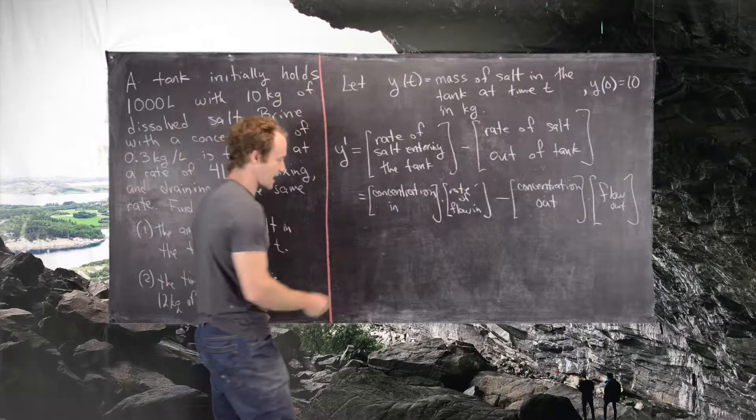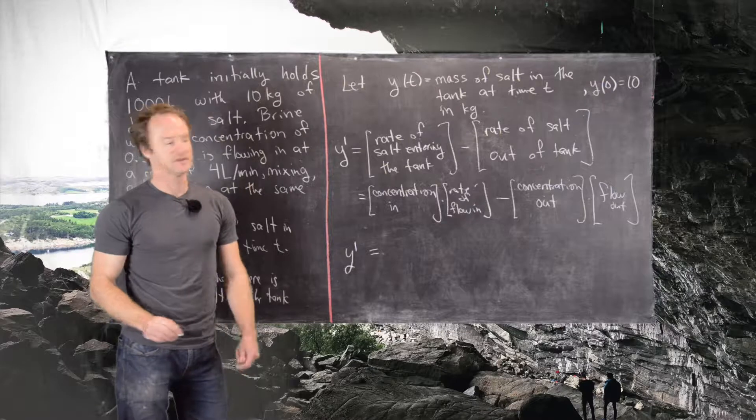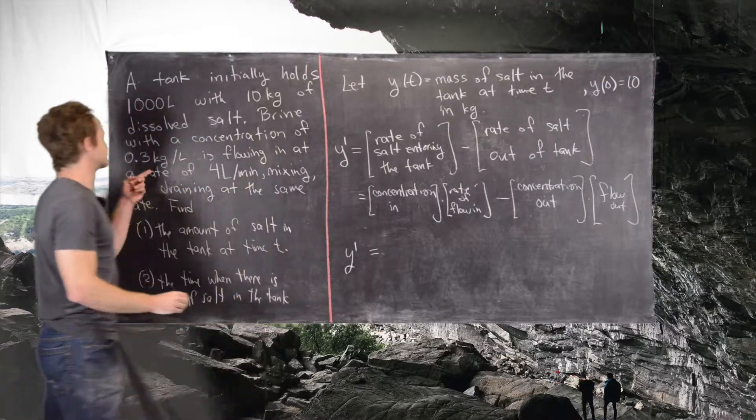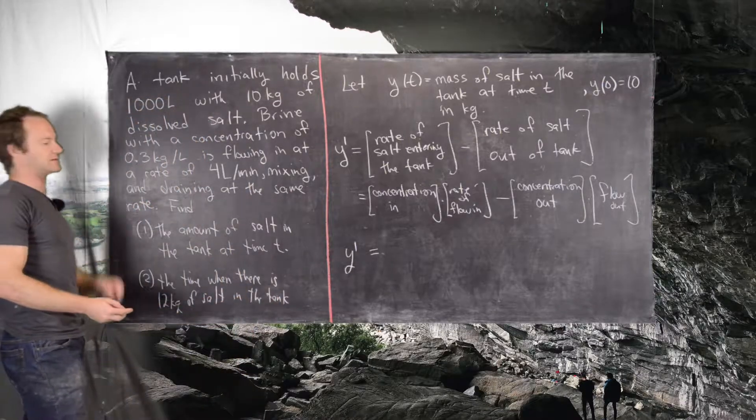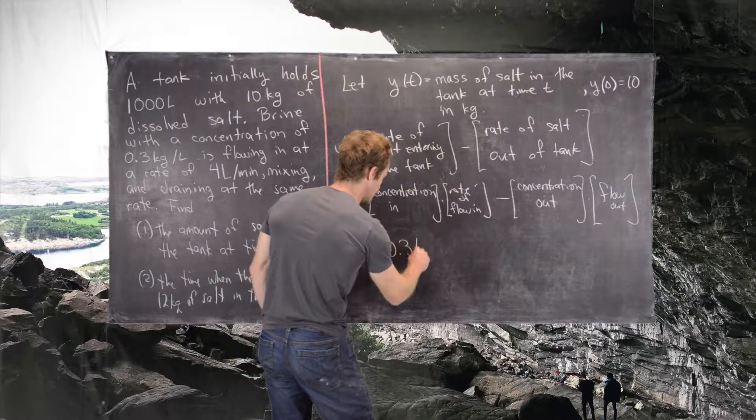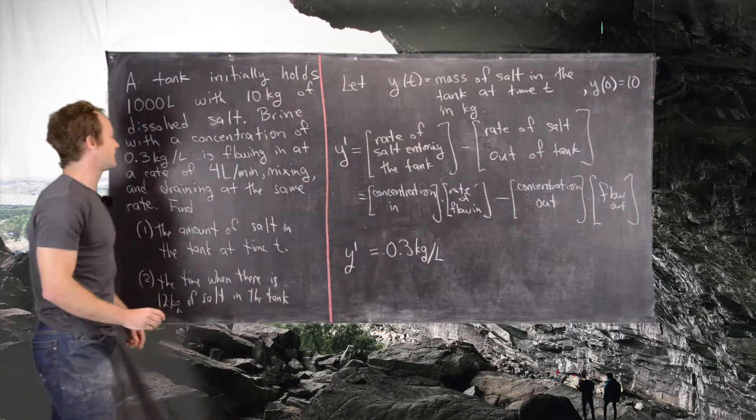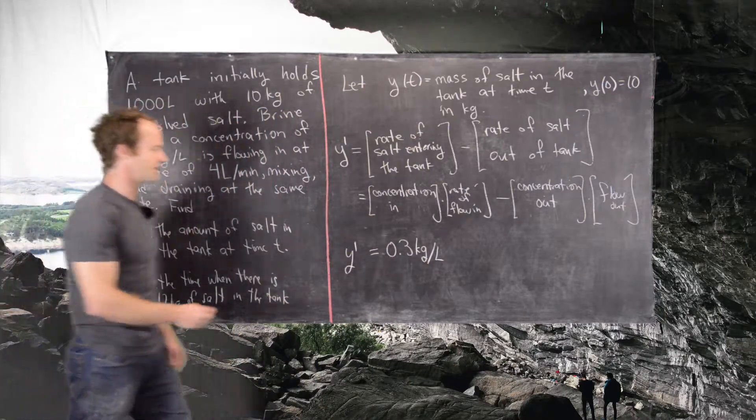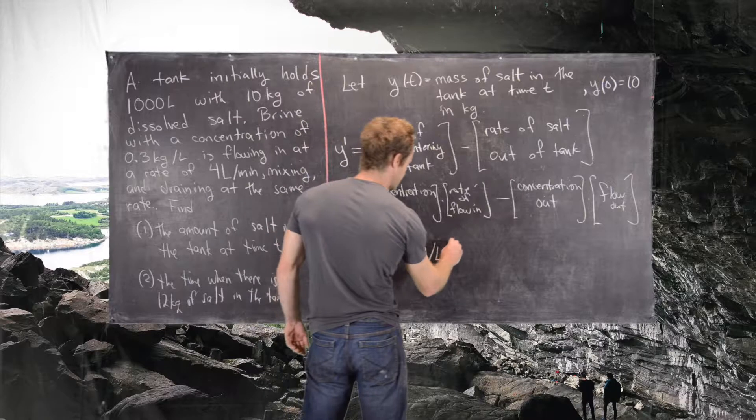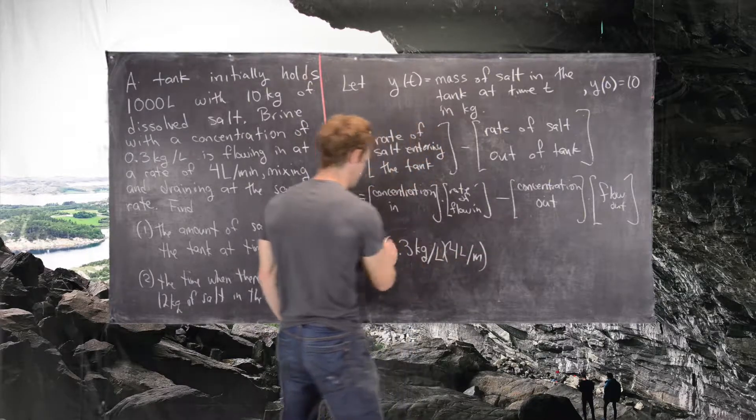Now we can break down each of these one at a time. Our concentration in is given by this 0.3 kilograms per liter. So here we have 0.3 kilograms per liter in, and our rate of flow in is given by this 4 liters per minute. So we multiply that by 4 liters per minute.